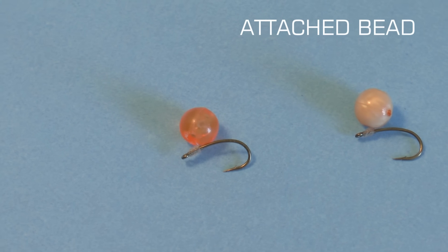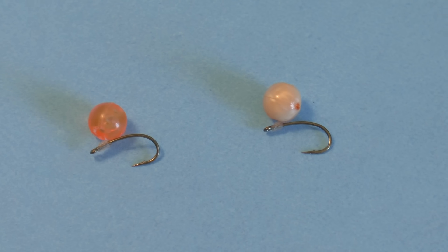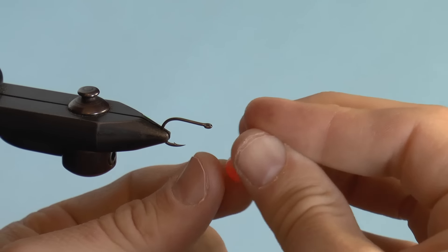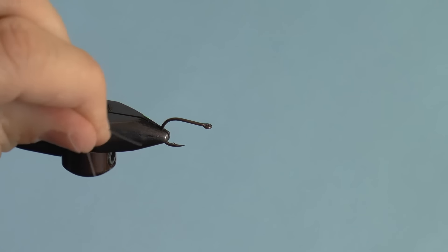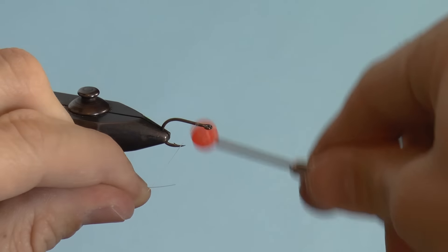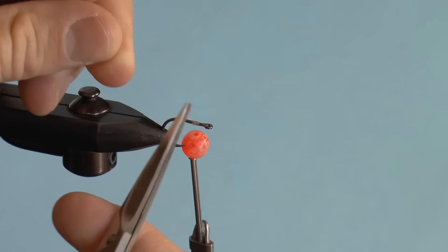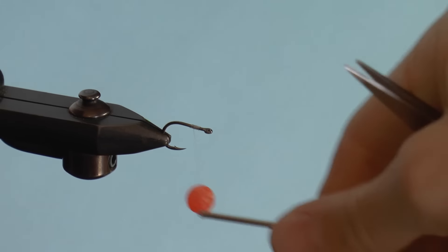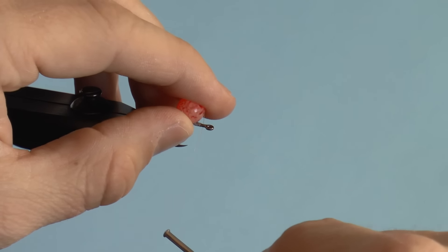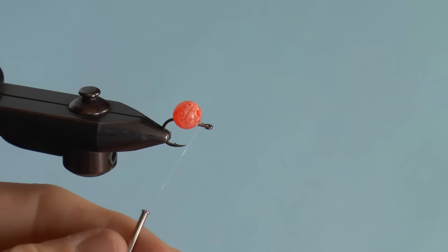Number eight is a plastic bead attached with mono thread. Thread a bead onto your mono thread. Now simply lay a thread base and cut the tag end of the mono. Lay the mono with the bead forward and tie back over the mono thread. Whip finish and you're done.